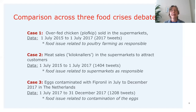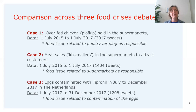The third case is a crisis that took place in the Netherlands in the summer of 2017, where eggs sold in supermarkets were contaminated with the pesticide fipronil. Fipronil was used for treating chicken diseases but ended up in the eggs, leading to the withdrawal and destruction of a large number of eggs, as fipronil also poses health hazards for human consumption.